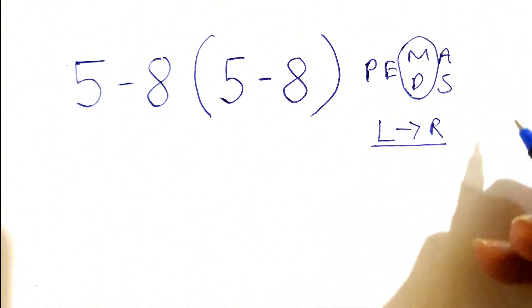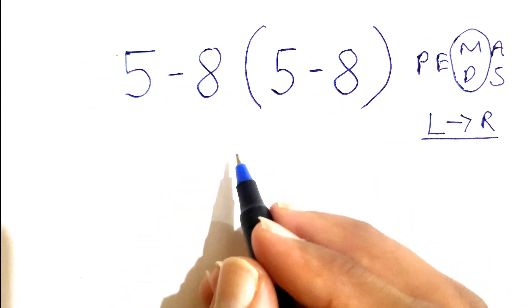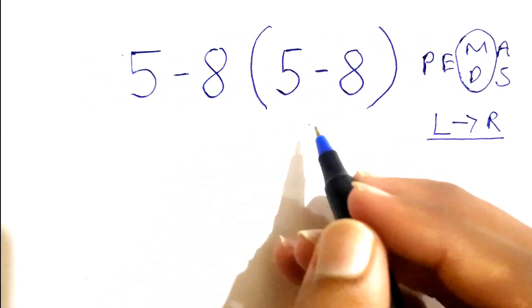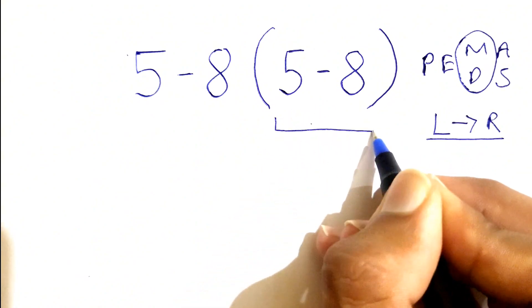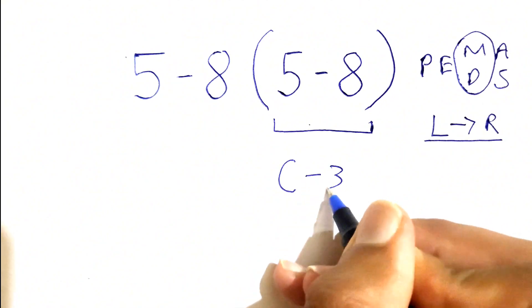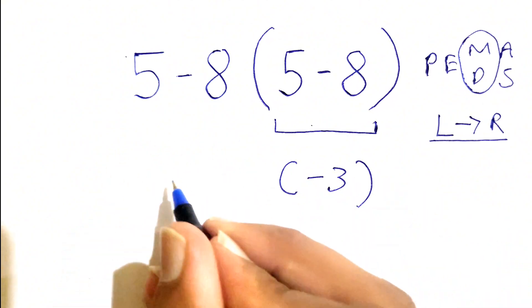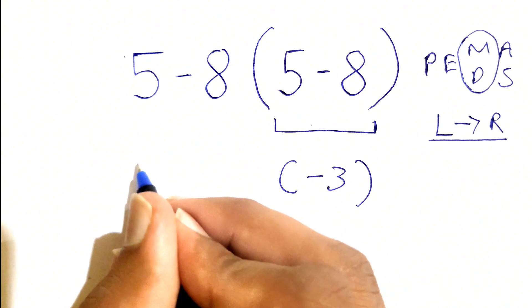Let's try solving this. We have parentheses first, so we solve 5 minus 8, which gives us negative 3. Then we write this expression once again to make it look simple: 5 minus 8 times negative 3.